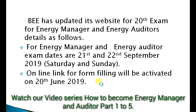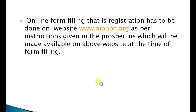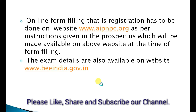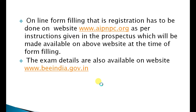The online link for form filling will be activated on 20th June 2019. To register your details, the online form filling has to be done on the website www.aipnpc.org as per the instructions given in the prospectus, which will be made available on the website at the time of form filling. Exam details are also available on www.beeindia.gov.in, where you can see exam details and various activities of BEE.